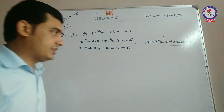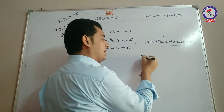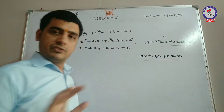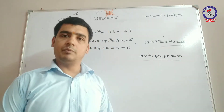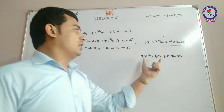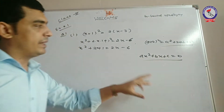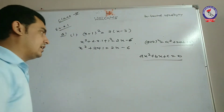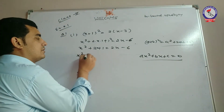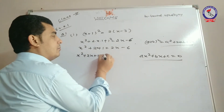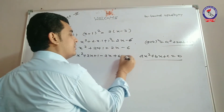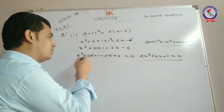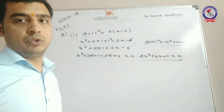हमको standard form में इसको arrange करना है: ax² + bx + c = 0 — this is the standard form of the quadratic equation, जो हमने last video में देखा था। Equal to 0 चाहिए, so: x² + 2x + 1 − 2x + 6 = 0. यहां 2x और −2x cancel हो जाते हैं।